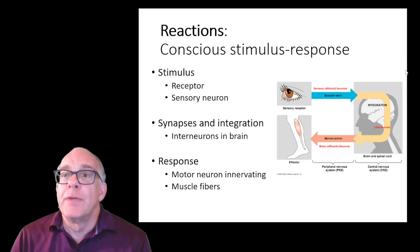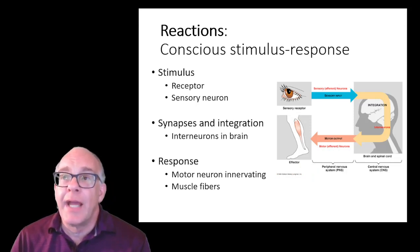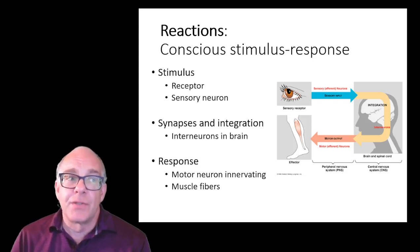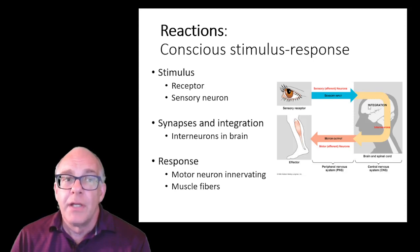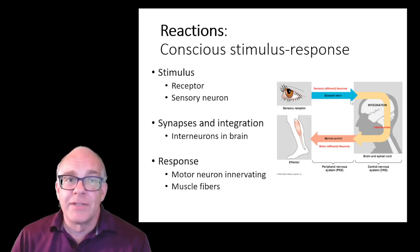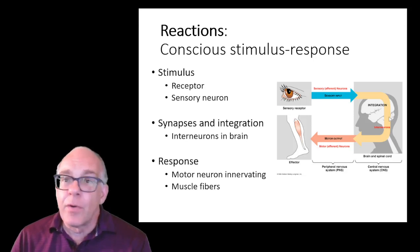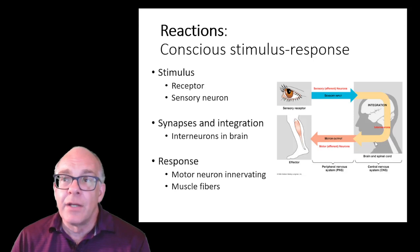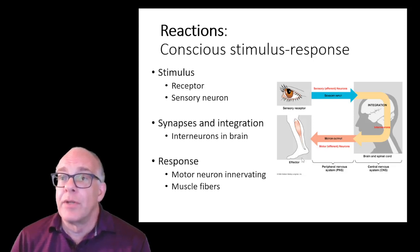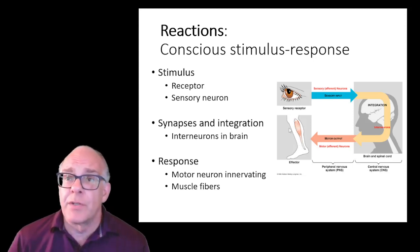In addition to reflexes, we can have reactions. In many cases, reactions are associated with a conscious stimulus-response, involving integration of information within the brain. A sensory stimulus activates sensory receptors; that signal is carried into the nervous system along sensory neurons, gets up to the level of the brain, where synapses and neurons integrate that information, and then responses go out — ultimately activating an effector, in this case motor neurons that activate muscle fibers and cause muscle contraction.